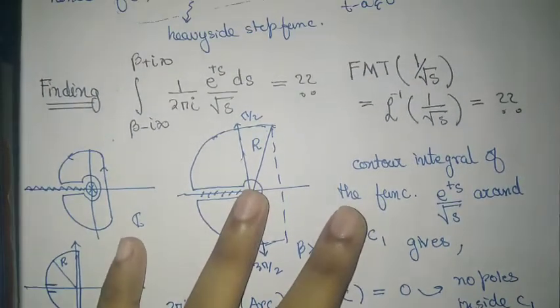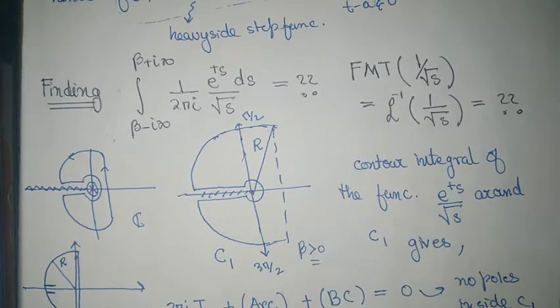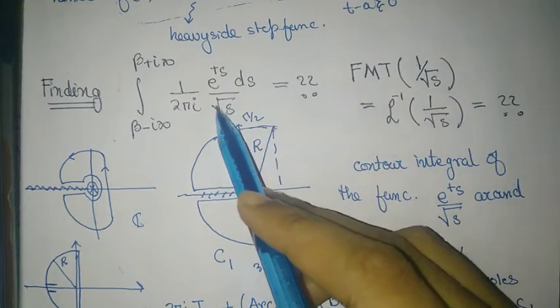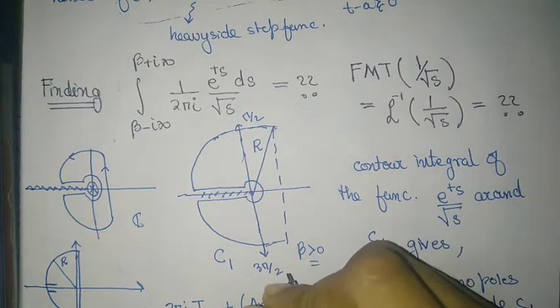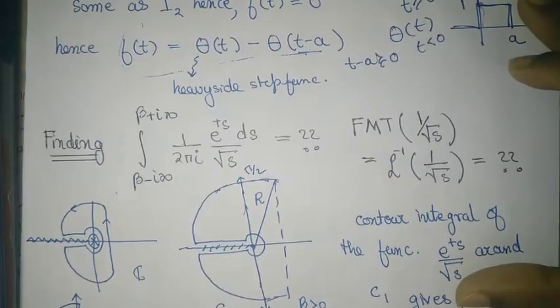Well, in this video, I will be showing the Laplace, inverse Laplace transform or the Bromwich integral or the Fourier-Mellin transform, three names for the same thing of 1 over root s. So let's just start with this. So how can we do this?